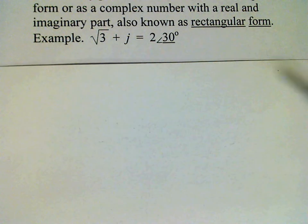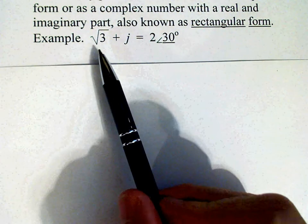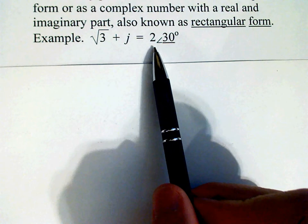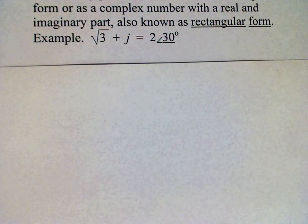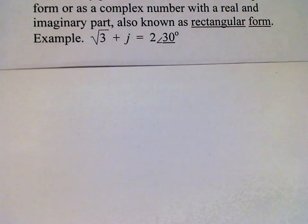So we see that the rectangular form √3 + j is equivalent to the polar form 2 at 30 degrees.